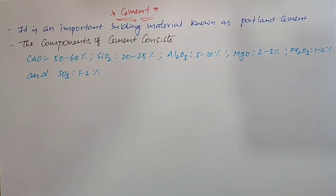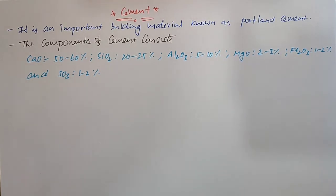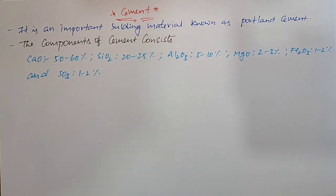For a good quality of Cement, the ratio of Aluminium and Silica should be between 2.5 to 4, and the ratio of Calcium Oxide to the total oxides of Silica, Aluminium and Iron should be as close to 2.